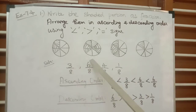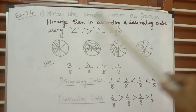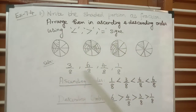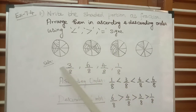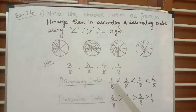So from the four figures, we have written the fractions as 3 by 8, 6 by 8, 4 by 8, and 1 by 8. Now we need to arrange them in ascending and descending order. Since all four fractions have the same denominator, we can simply compare the numerator values to arrange them.